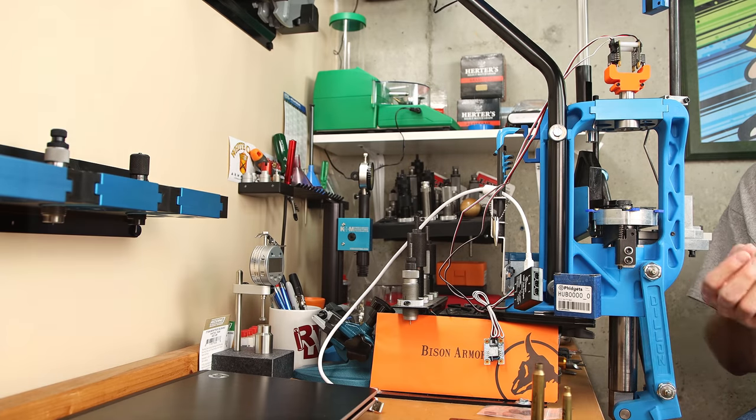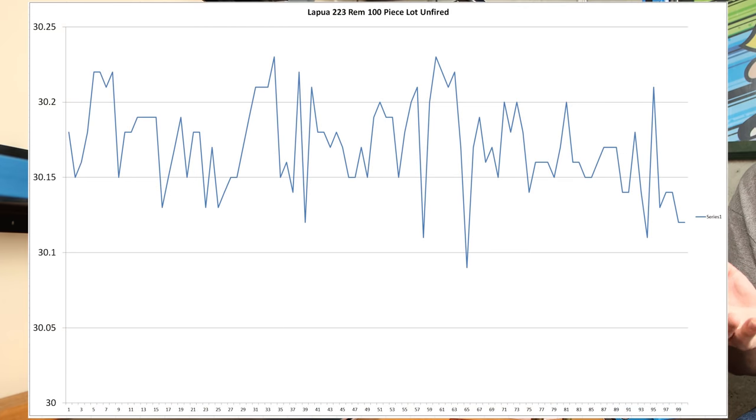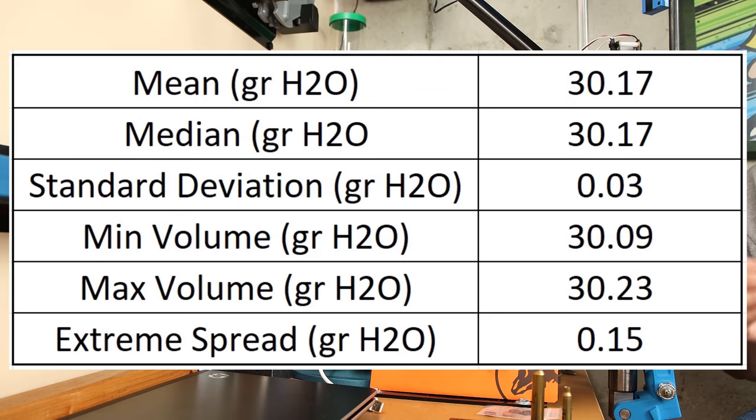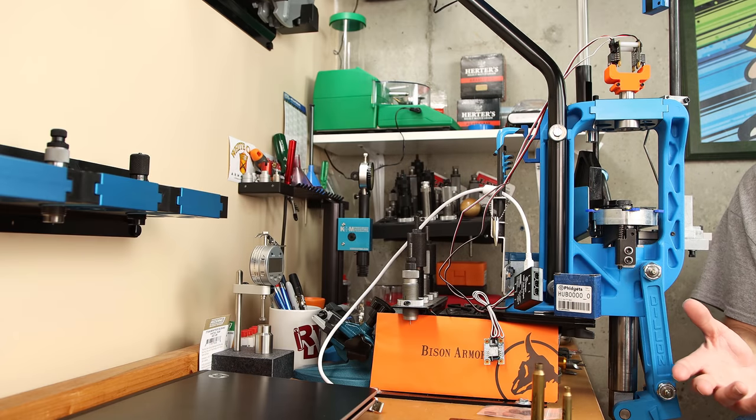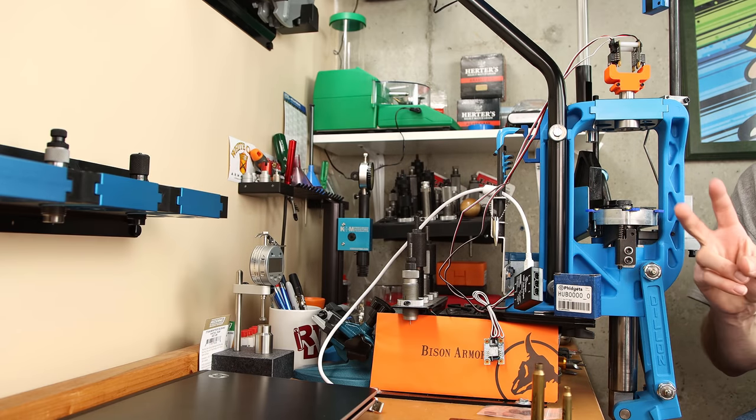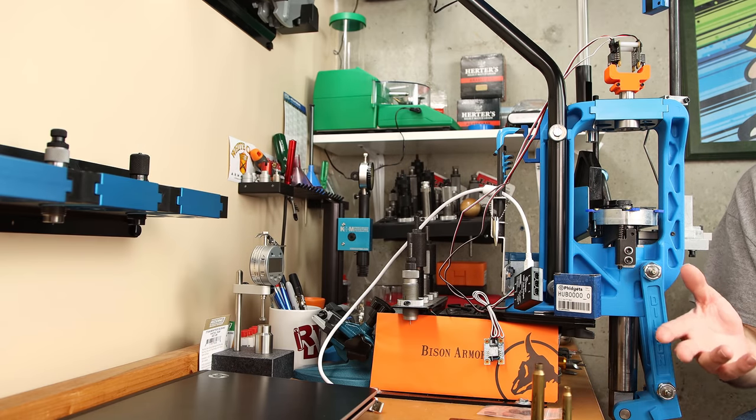So what if we wanted to measure a whole lot of brass, pun intended? Well here is an entire 100 piece lot of 223 Lapua brass, unfired. We can see across the 100 piece lot, the maximum volume measured was 30.23, the minimum volume was 30.09. So the extreme spread on a lot of Lapua 223 brass, again, unfired, was 0.15 grains of water. Pretty darn good in my opinion. It gives me some confidence in the lot and the measurement device. Standard deviation across the whole lot was 0.03. Frankly, since this is unfired brass, I wouldn't be pulling out any flyers at this point. But if you wanted to, you could.